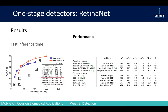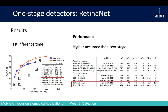RetinaNet's performance on COCO is reported at around 61% at IoU 0.5, which is higher than SSD and YOLO at one stage. The inference time is also quite low, making it suitable for real-time applications with higher accuracy. I recommend trying RetinaNet-like architectures for detection on smartphones or Raspberry Pis with accelerators.